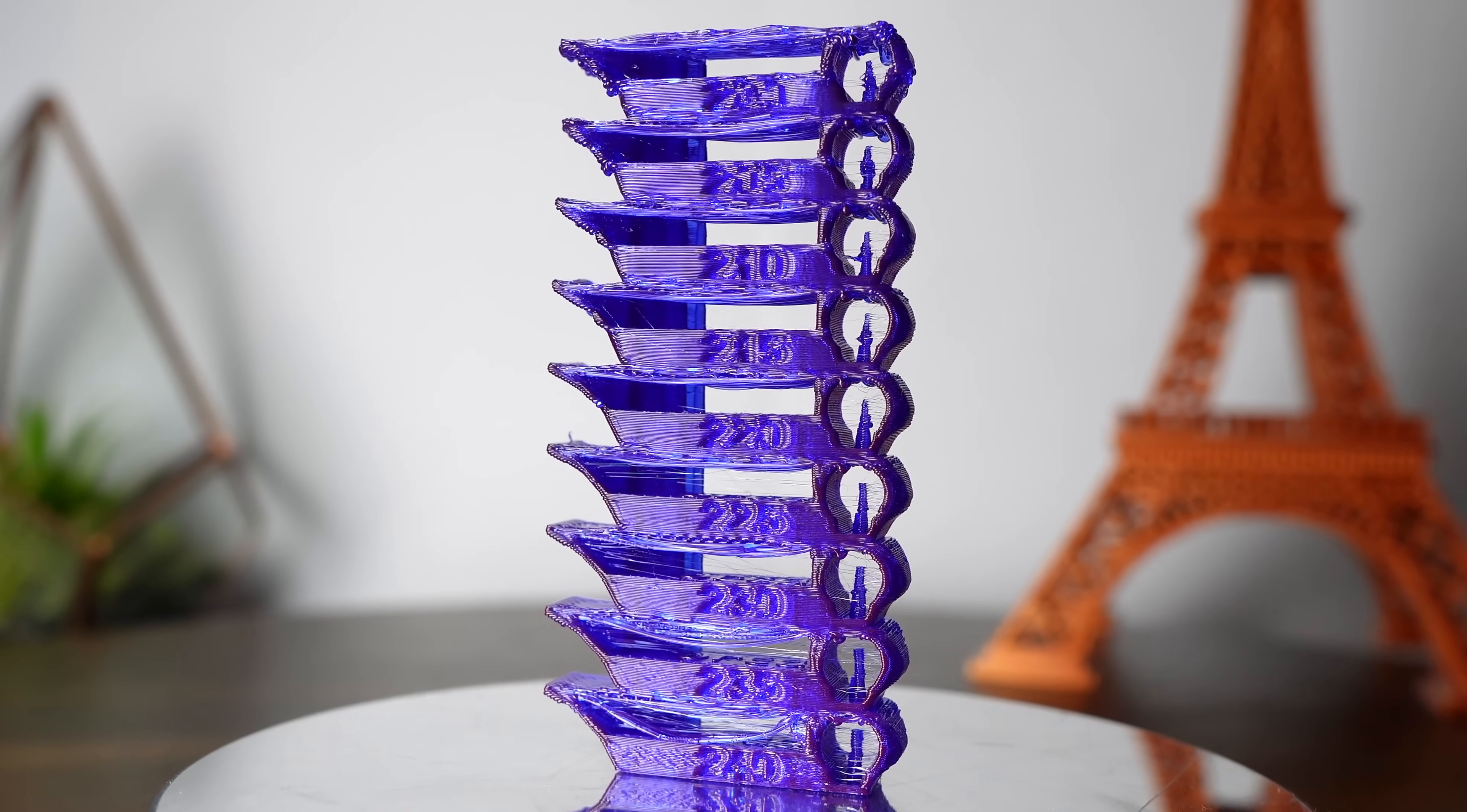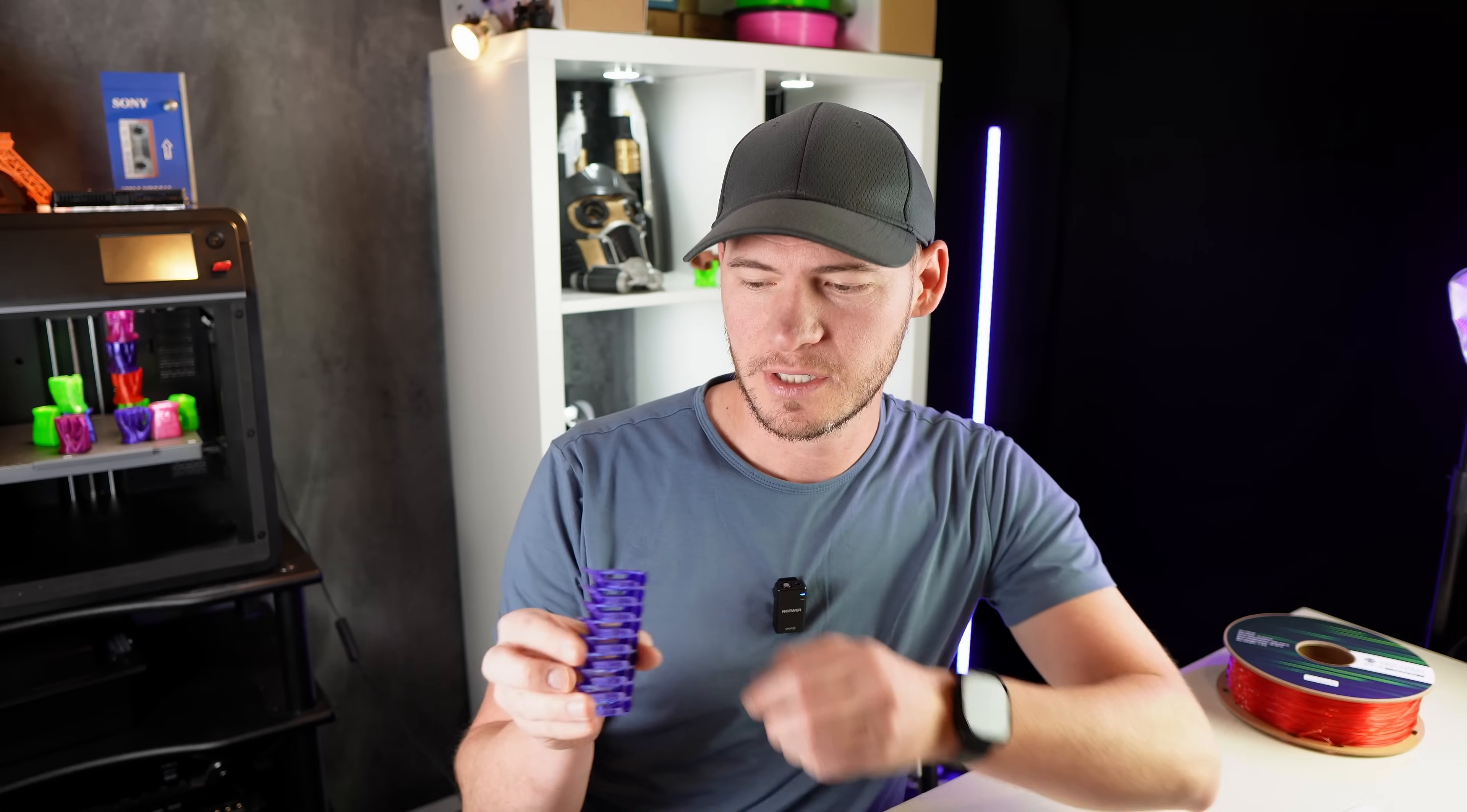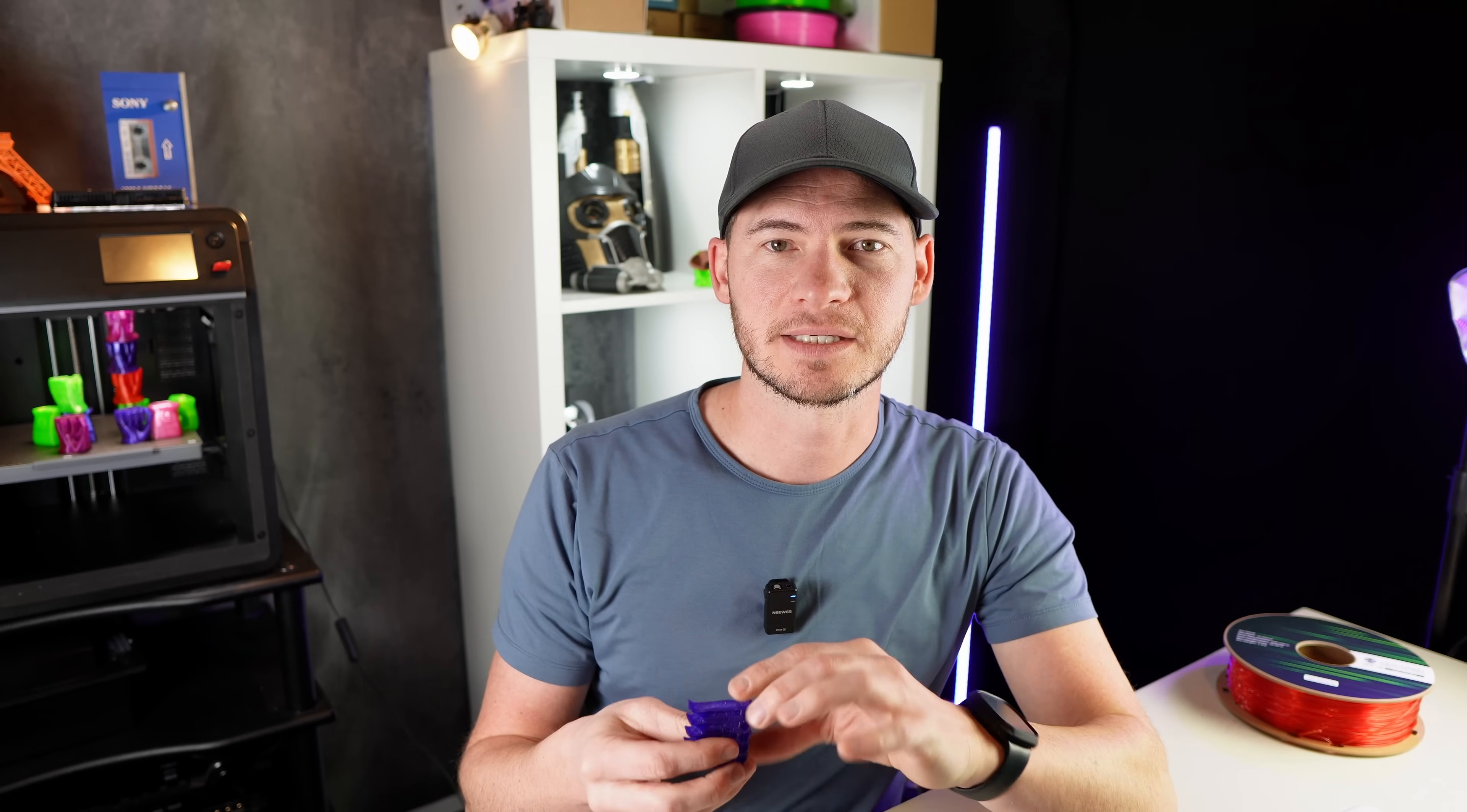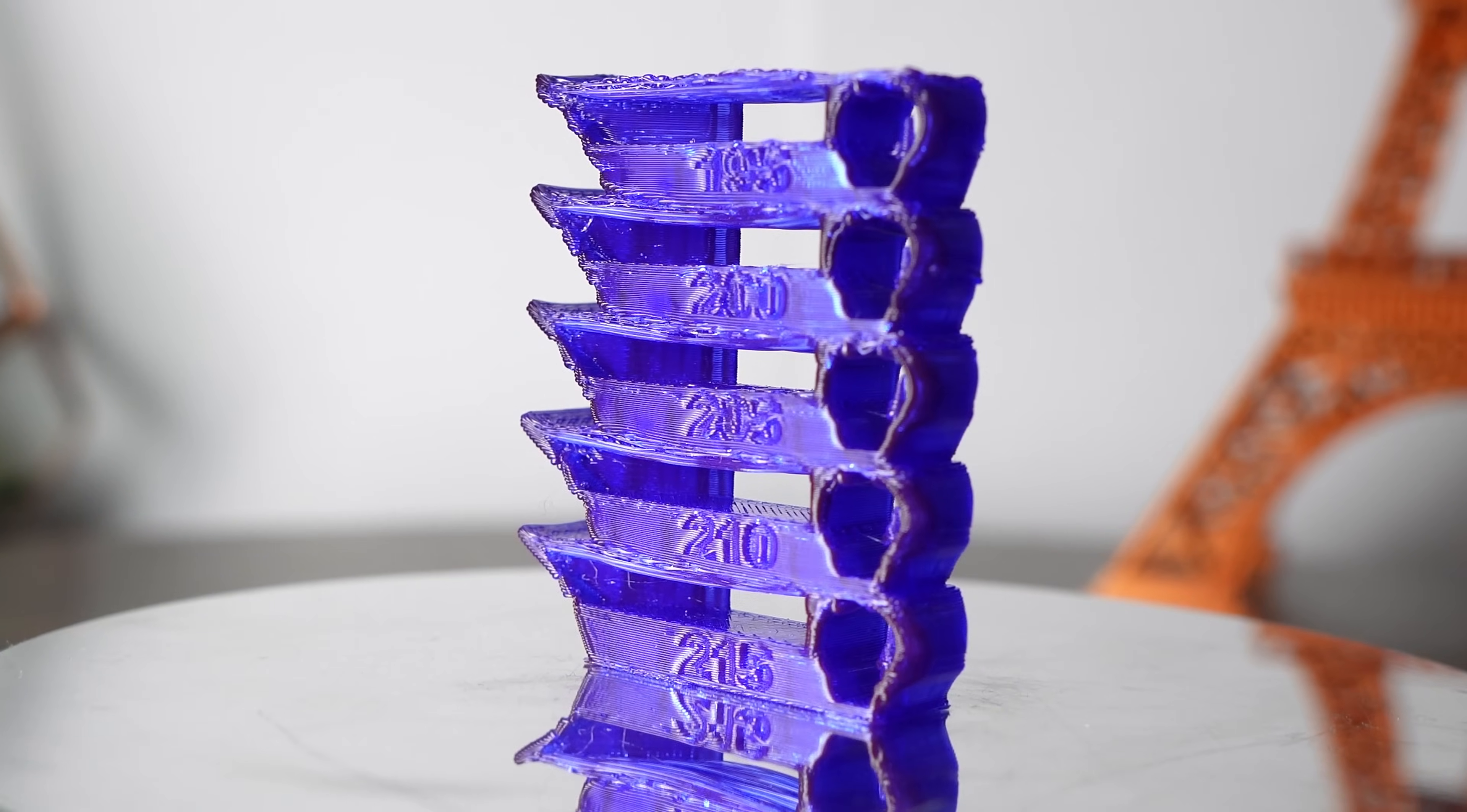But according to this test, the temperature around 215 or 210 looks a lot better than the higher temperatures. This tower was pretty tall and it was starting to sway a little bit at the top. So I printed another test with just the lower temperatures. I mean, that looks really good. Did I just solve my issue? Is this the problem? Is it a temperature thing? Let's run one last test and see. Wow, that looks so much better. No stringing at all.